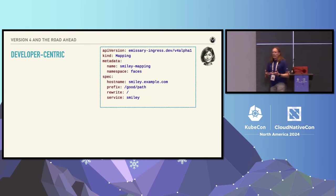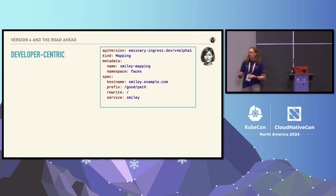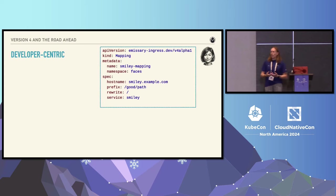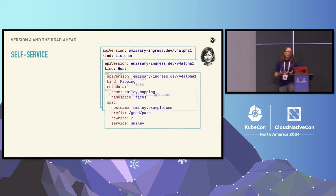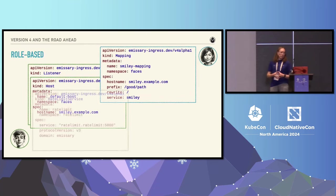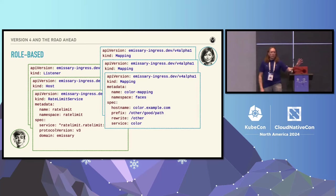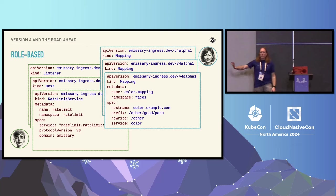By developer-centric, I mean that the stuff you see in Emissary's input language is tailored to what an application developer is going to be likely to want to do. It is not specifically tailored for being something that an infrastructure engineer is going to find perfect for their needs — that was not the goal. It is self-service in the sense that, especially in smaller organizations, the app developers can do everything on their own. But in larger organizations, and this also gets into the role-based part, you can split this so that people who are worried more about cluster ops get to do things like listeners and hosts and rate limit services, leaving your developers free to talk about how requests get to their workloads.